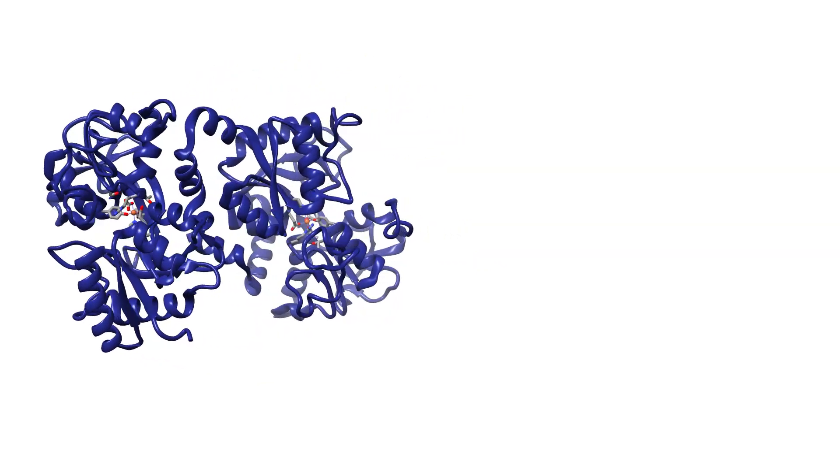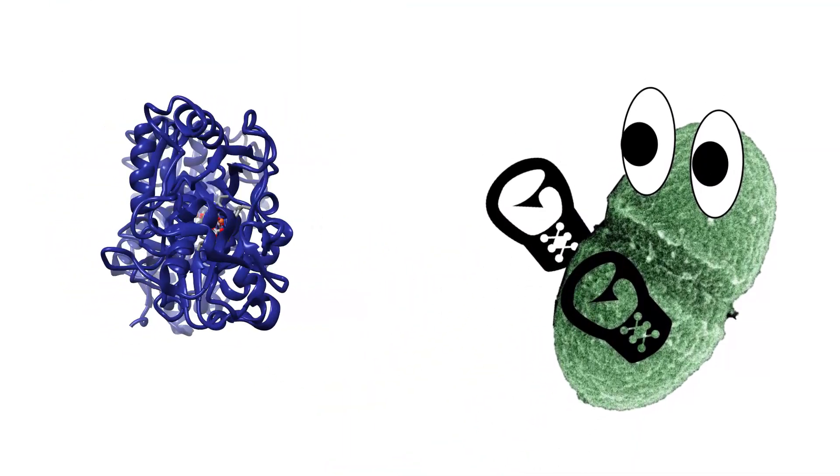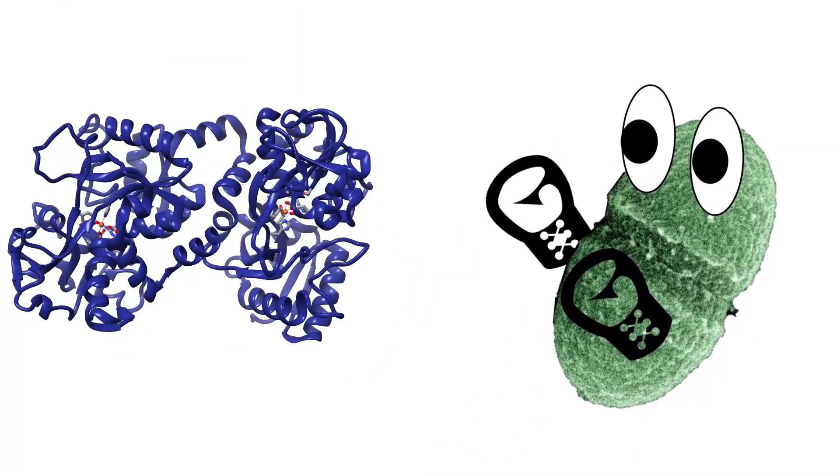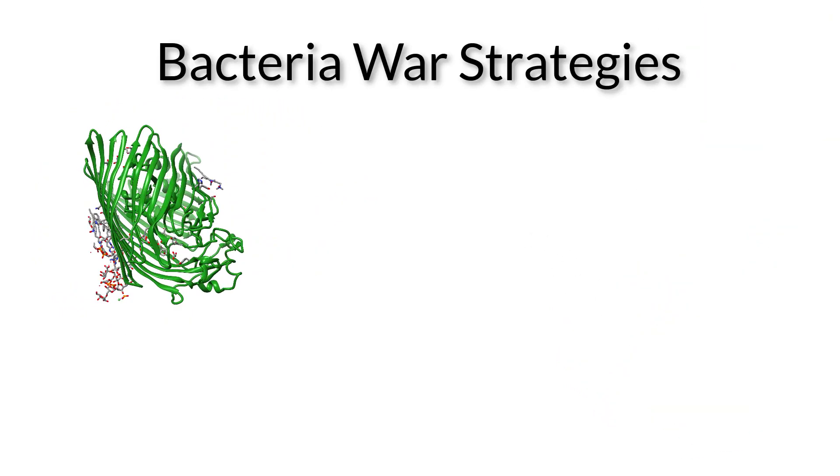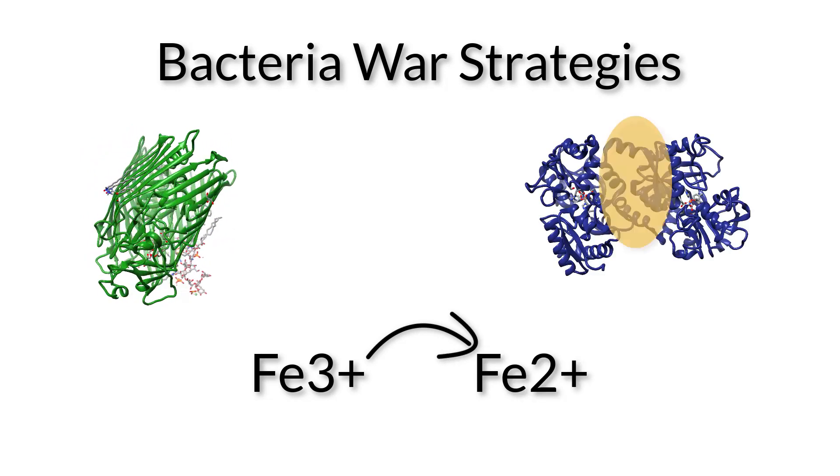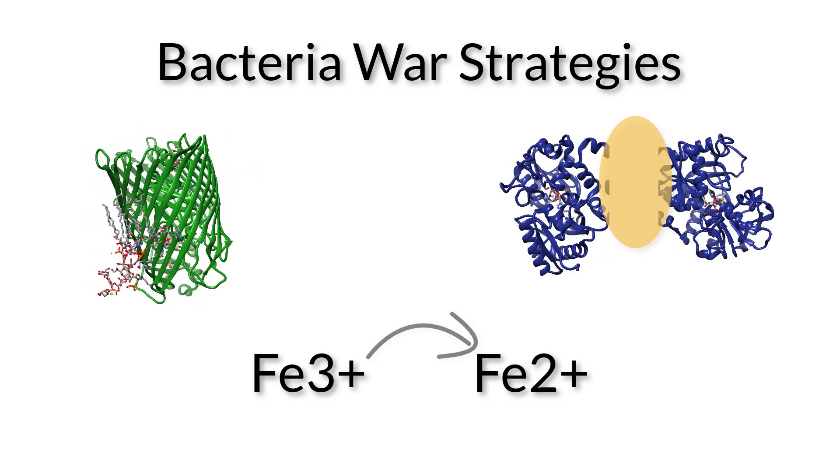Some bacteria, such as enterococci, have developed tactics to fight against iron sequestering proteins, including lactoferrin. These tactics include the use of siderophores, ferric reduction, and proteases that can cleave iron chelating proteins.